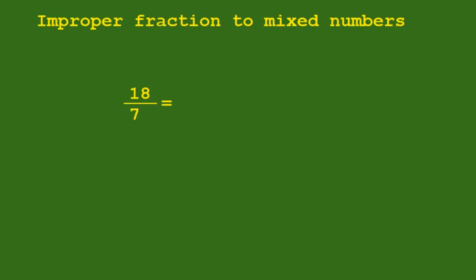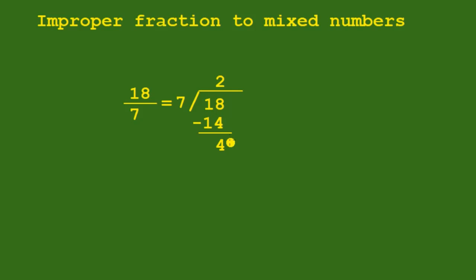In this example, we have 18 over 7. So this is 18 divided by 7. We have 2; 2 times 7 is 14. 18 minus 14 is 4, so we have 2 and 4 over 7. So this is our mixed number. So 18 over 7 is equal to 2 and 4 over 7.